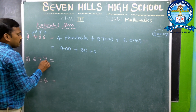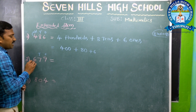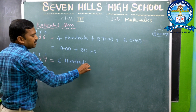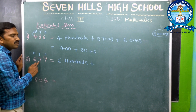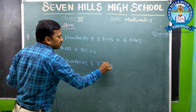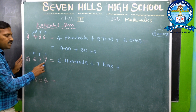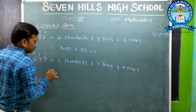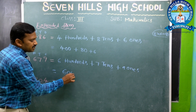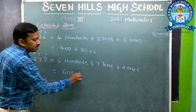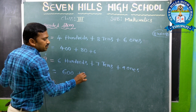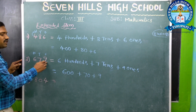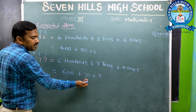Now 679. 9 is in the 1s place, 7 is in the 10s place, 6 is in the 100s place. 6 hundreds plus 7 tens plus 9 ones. 6 hundreds means 6 into 100 = 600, plus 7 tens means 7 into 10 = 70, plus 9 ones means 9. So 679 expanded form is 600 + 70 + 9.